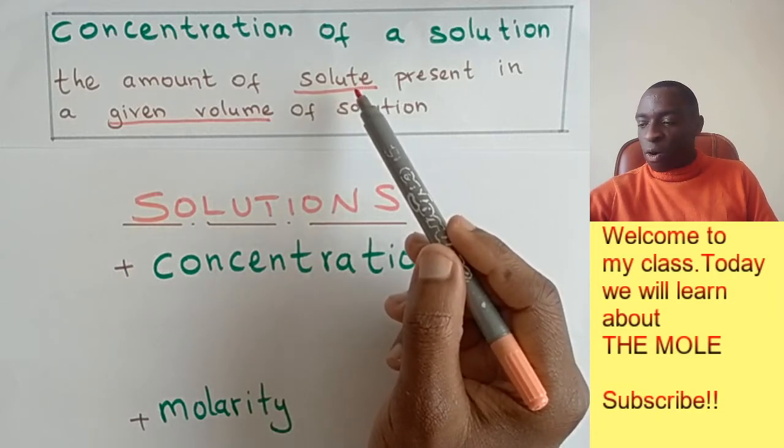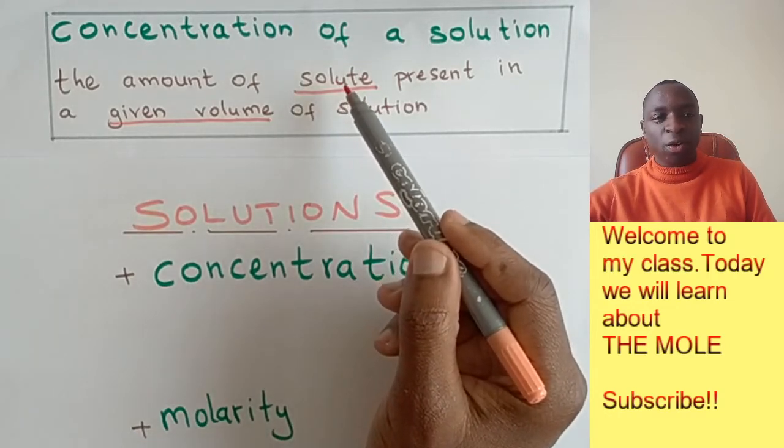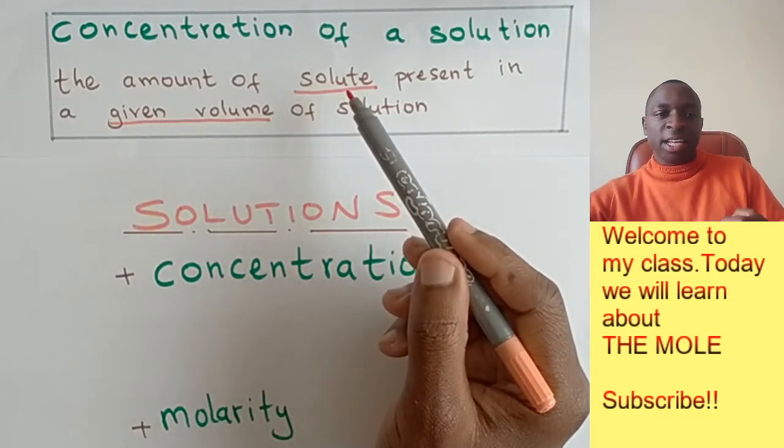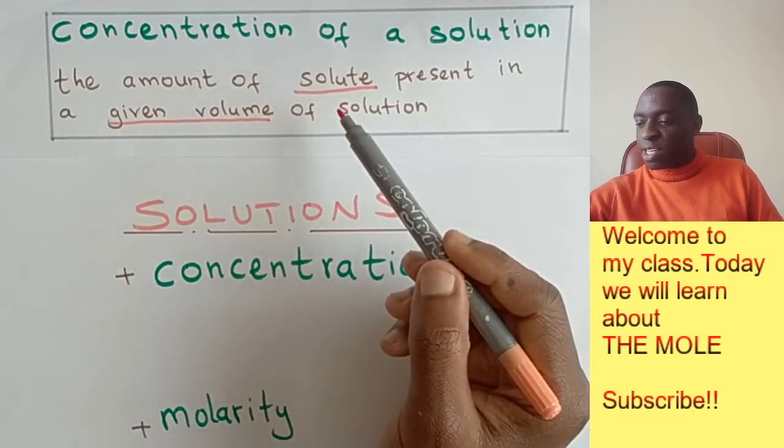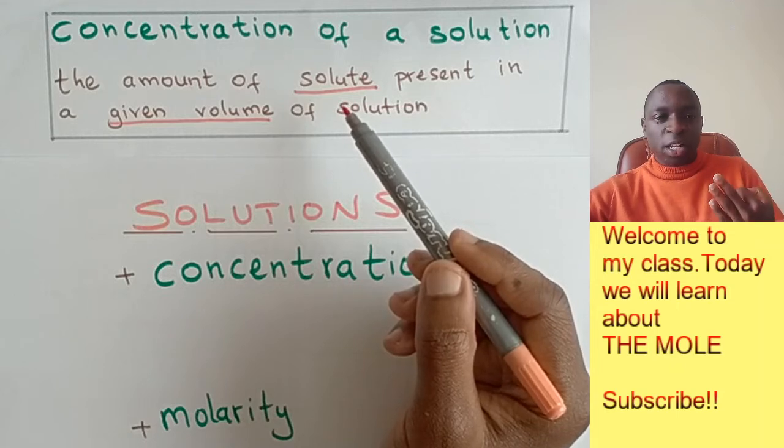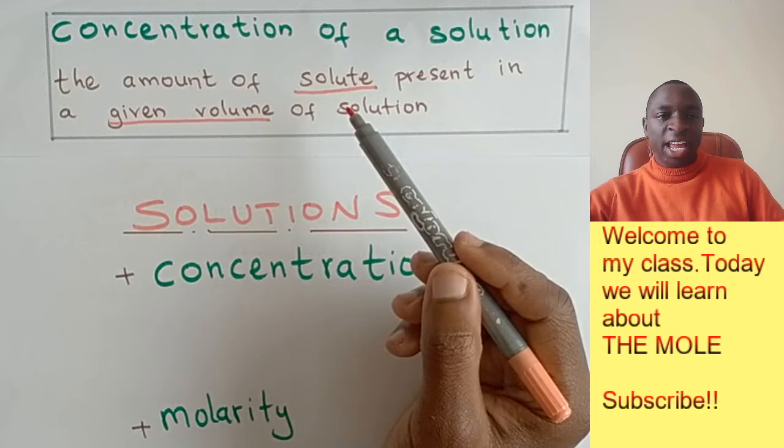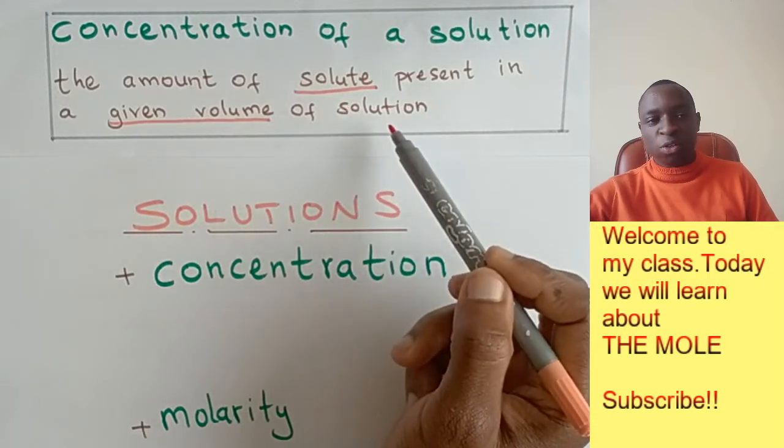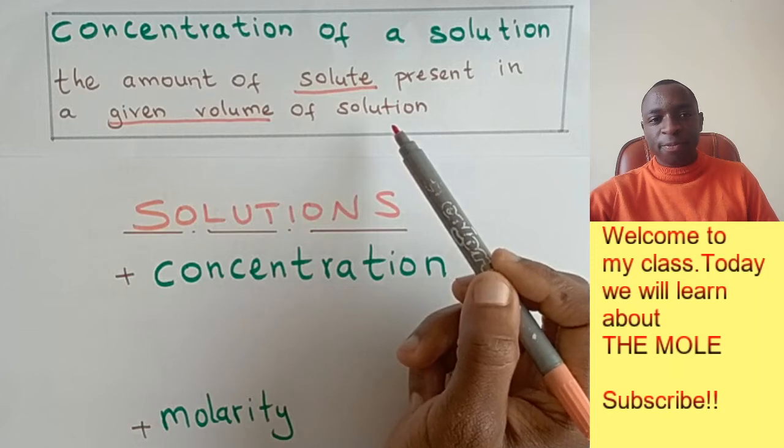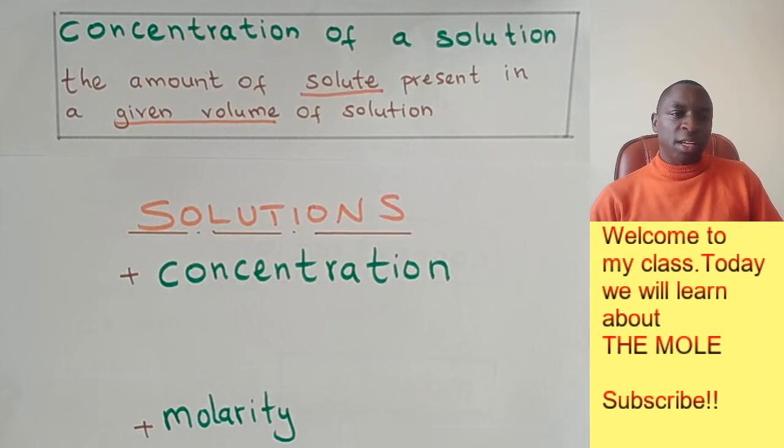If you dissolve five teaspoons of sodium chloride in two cups of water, then your concentration is going to be five teaspoons of sodium chloride in two cups of water. That is the volume of the solution that you will end up with. However, in chemistry, we want to be more specific. We want to use more specific units.